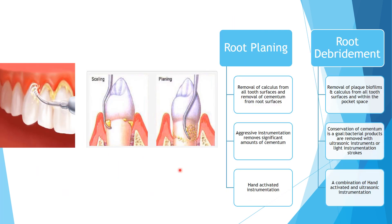Comparing root planing and root debridement: under root planing there is removal of calculus from all tooth surfaces and removal of cementum from root surfaces. Whereas root debridement involves removal of plaque biofilms and calculus from all tooth surfaces and within the pocket space. Root planing involves aggressive instrumentation which removes some amount of cementum, whereas in root debridement conservation of cementum is the goal — removal of bacterial products only, using ultrasonic instruments or light instrumentation strokes. Root planing is mostly with hand-activated instrumentation whereas root debridement uses a combination of hand-activated and ultrasonic instruments.